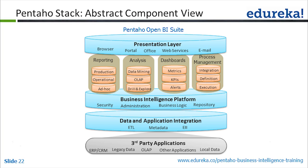At the bottom you can see third-party applications: ERP, CRM, legacy data, OLAP, other applications, and local data. The source database can be anything, and on top of that you have the Pentaho BI suite. You can extract data from these third-party applications using the Pentaho ETL data integration tool and make it available in the presentation layer through reporting and dashboards.